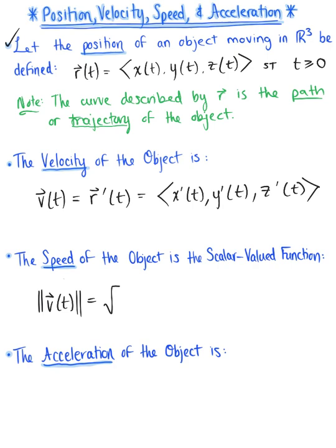Which of course we know is defined by the distance formula. So we have the square root of x prime of t squared plus y prime of t squared plus z prime of t squared. And practicing good algebra here, we know that there are parentheses around that argument or the radicand.